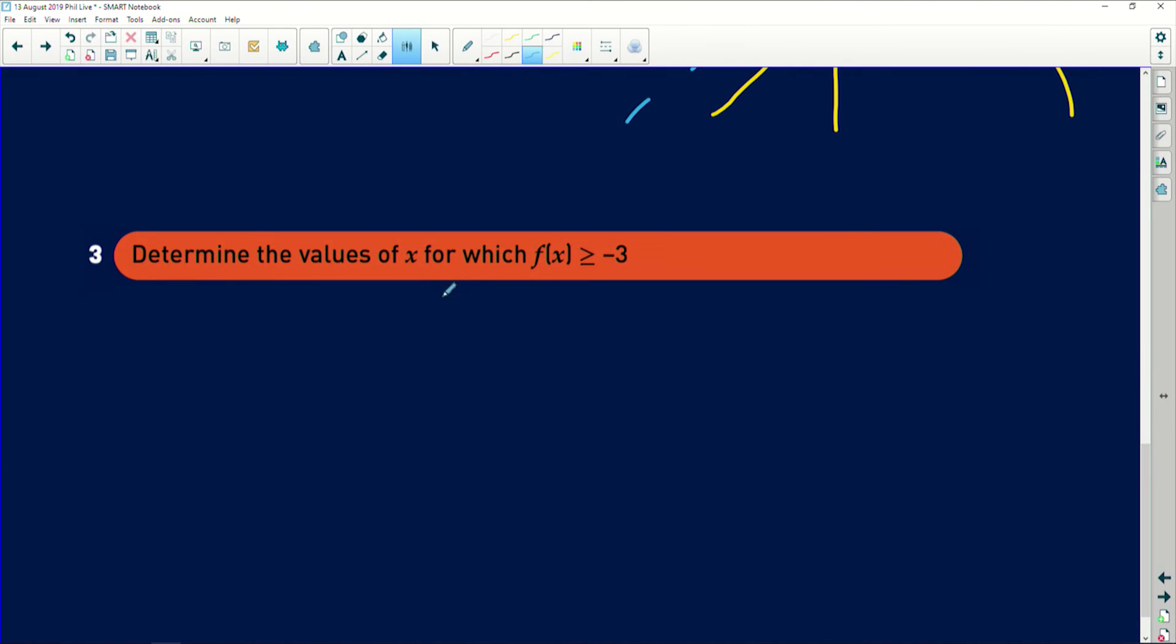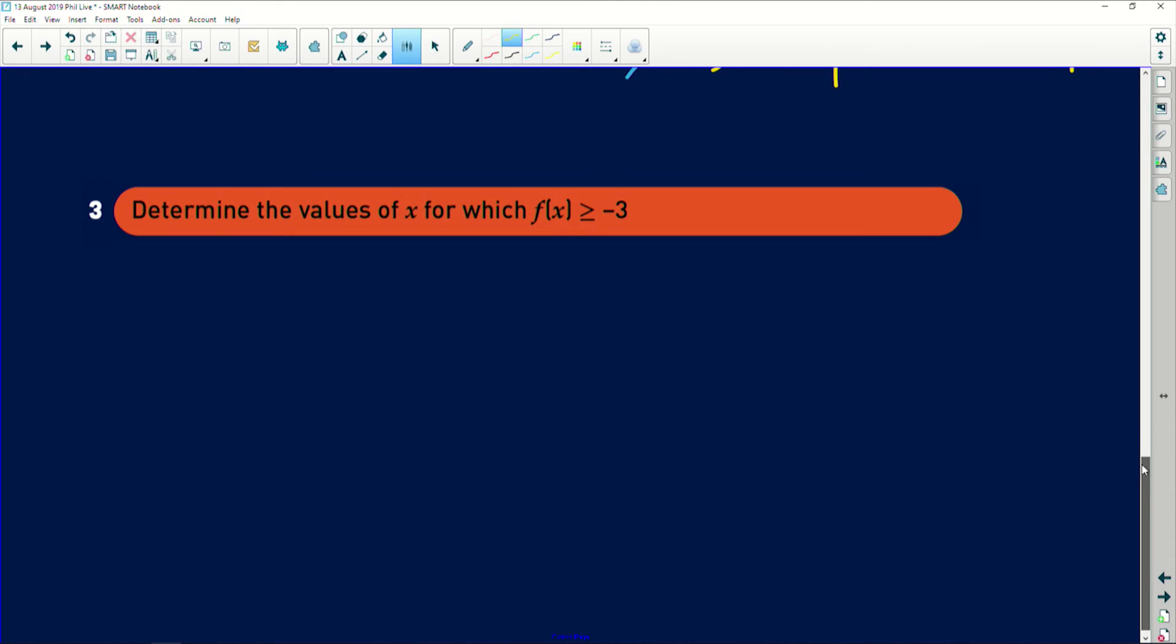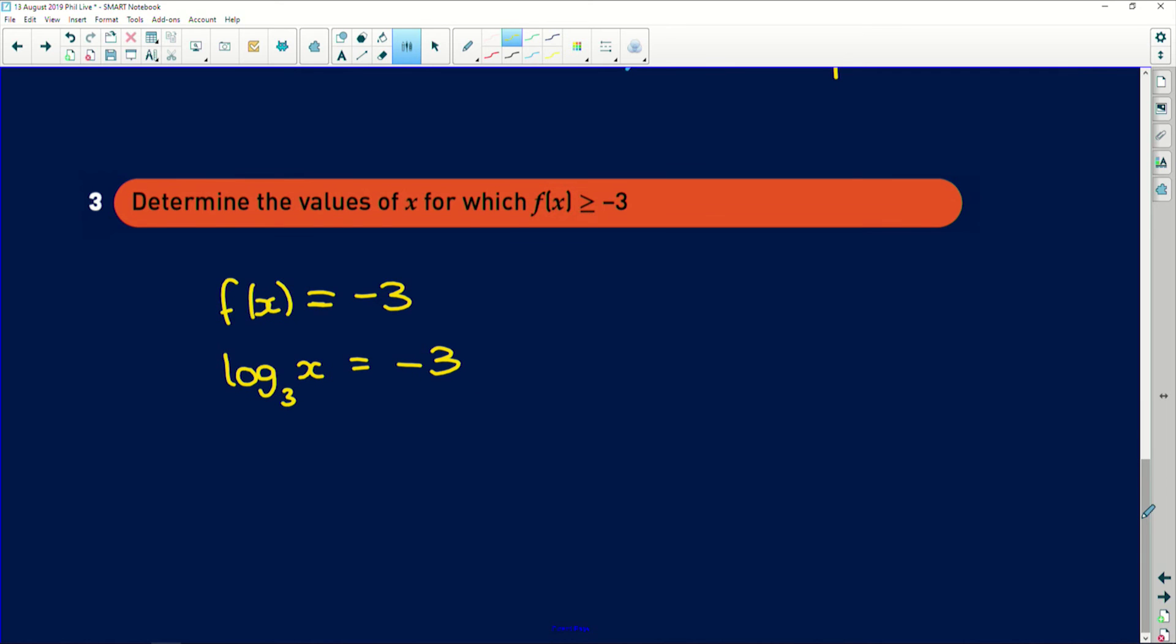Lastly, it says determine the values of x for which f(x) is greater than or equal to -3. Now remember, when you're trying to do this, you would first treat it like an equality. So you're going to say f(x) is equal to -3, which means that we have log base 3 of x is equal to -3. And now remember, when we're trying to solve for these, we say that x is equal to the base of 3 raised to the power of -3, which is the same as saying 1 over 3 to the power of -3, which is 1 over 3 cubed, which is 1 over 27.